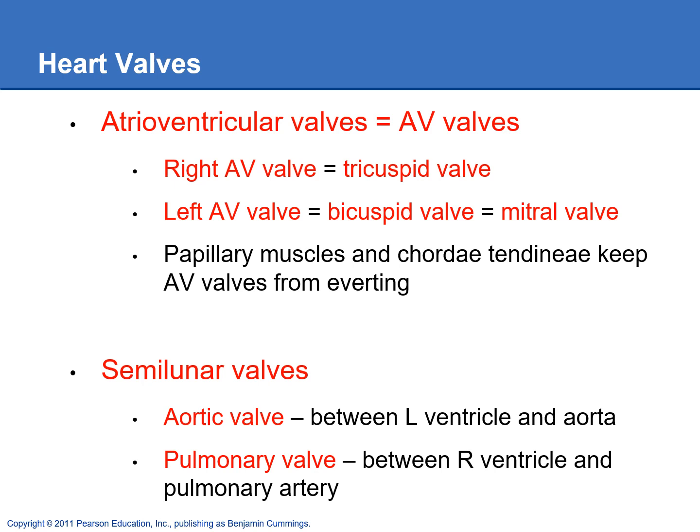The two AV valves sit between the atria and ventricles — one on the right side and one on the left. The right AV valve is also known as the tricuspid valve. The left AV valve has two other names: the bicuspid valve and the mitral valve — know all of these names because they're all used in medicine. The semilunar valves are the aortic semilunar valve between the left ventricle and the aorta, and the pulmonary semilunar valve between the right ventricle and the pulmonary artery.